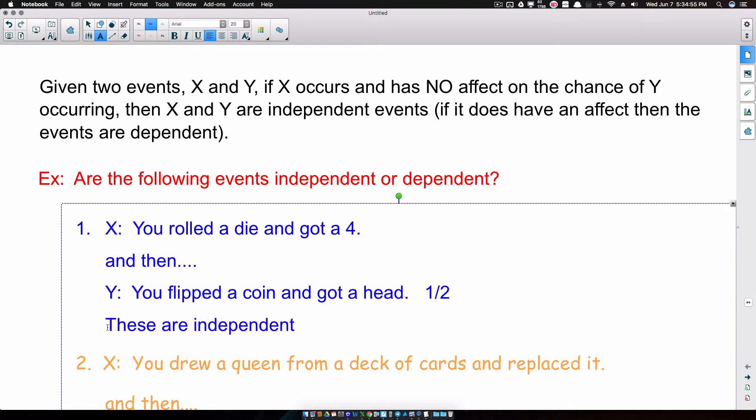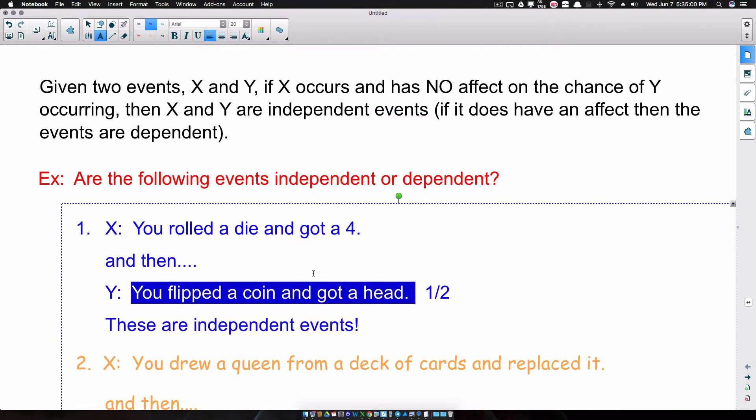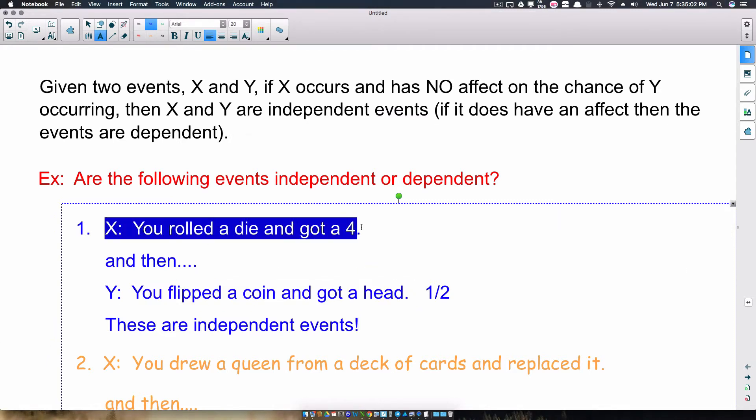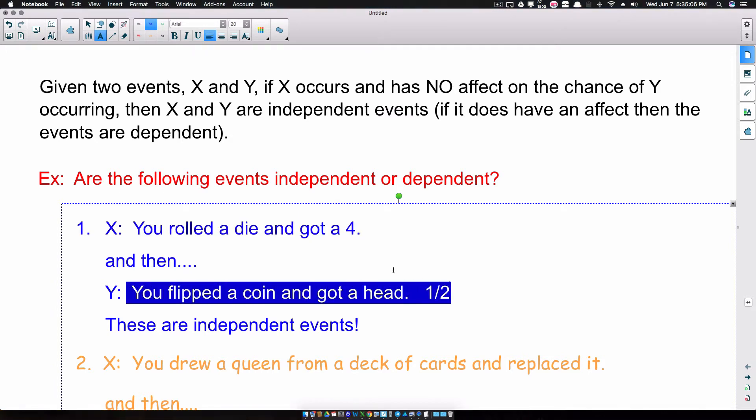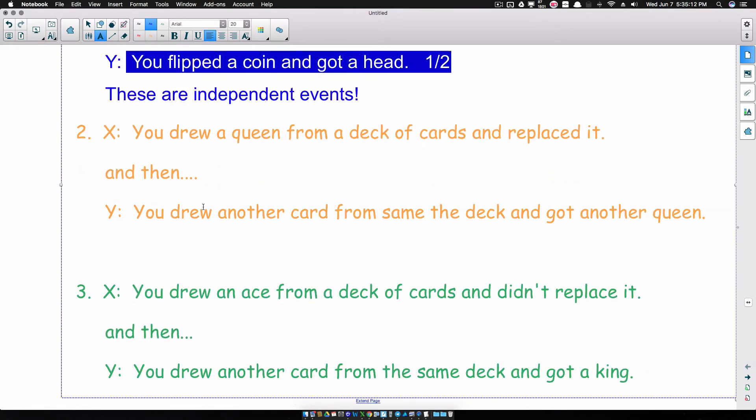And think about this again. Because the outcome of this is not going to change the probability of this occurring. Because really, dice and coins, they're not connected. If that makes sense. Now, let's be a little bit more careful with these next two examples.